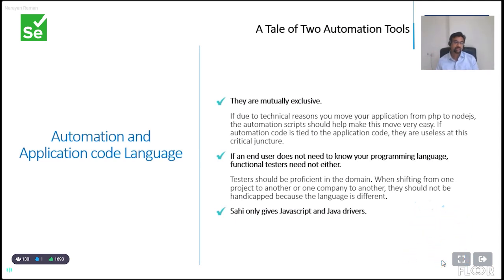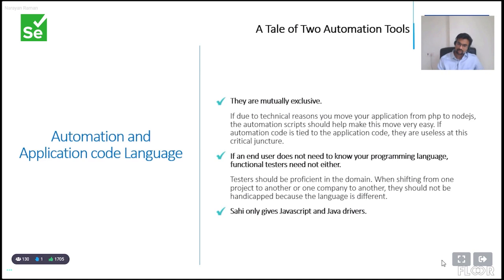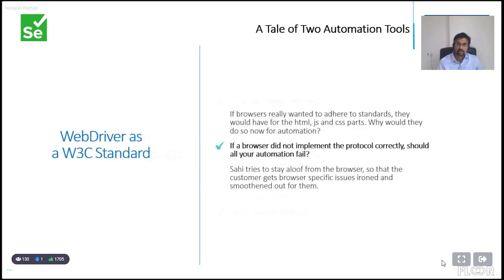Initially one selling point of Selenium was drivers in all different languages. We didn't need that, so we said we'll only do JavaScript. But then other people integrating us into their RPA tools or other tools needed a Java driver. So we also have a Java driver, but overall, we say JavaScript is the simplest language — just use that.